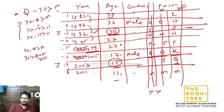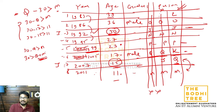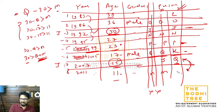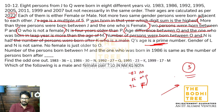Q has to be a prime number. Q agar 17 lein toh K ke baad 2 chahiye, Q yahan par nahi ho sakta. Q yahan par ho sakta hai - 30 is prime. Baaki apna sahi hai - ek case interchange karna tha, wahi mistake thi. Gender of L and N is not the same. L male hai, N ki gender hold par rakhte hain.